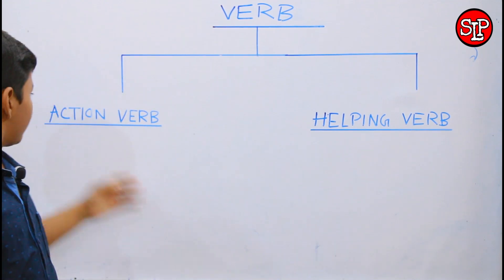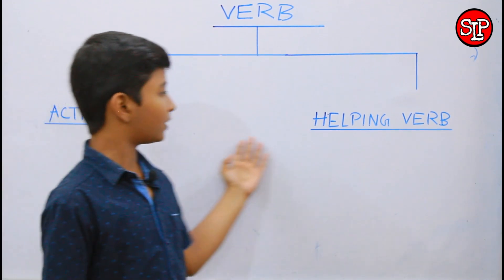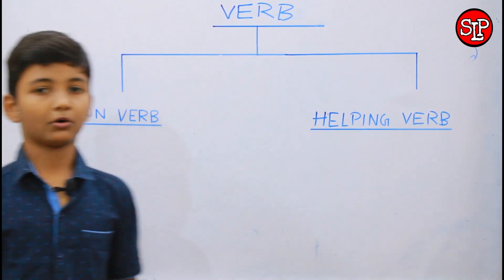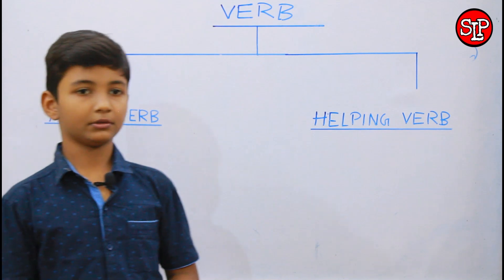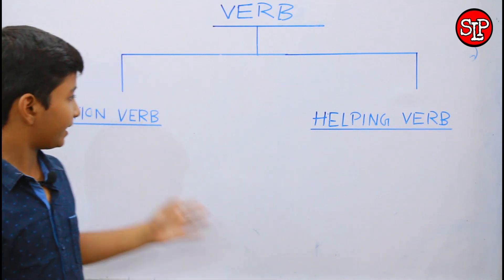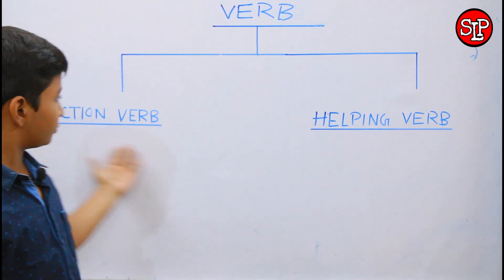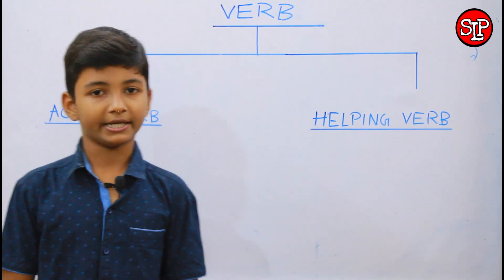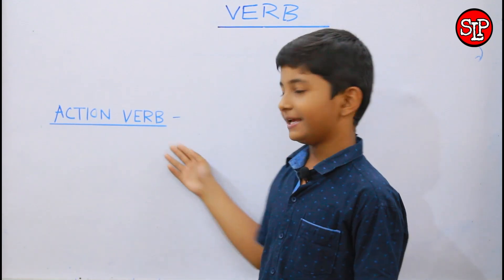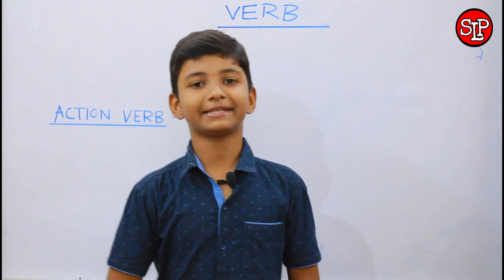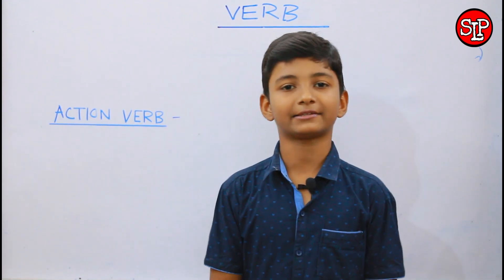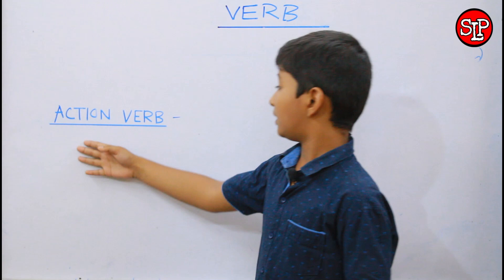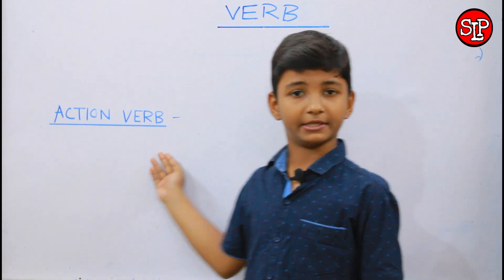Verb do prakars hote hain — action verb or helping verb. So, aagey hum log in dono topics ko detail mein jaanenge. Action verb — ek verb jis se ek physical action ka bodh hota hai, use hum action verb kahte hain.